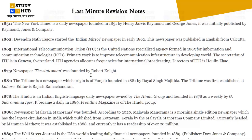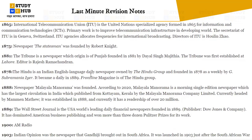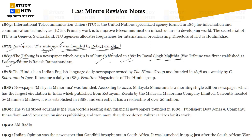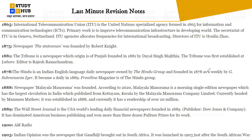In 1875, The Statesman newspaper was founded by Robert Knight. In 1881, The Tribune — a famous newspaper originating from Punjab — was founded by Lala Karam Chand Majith. The Tribune was first established at Lahore, and its editor is Raj Ramachandran.